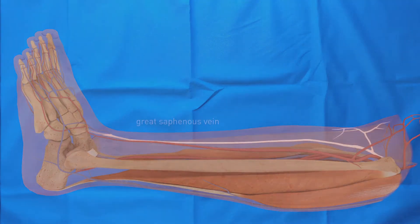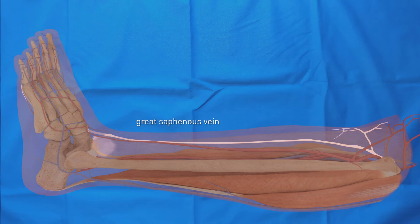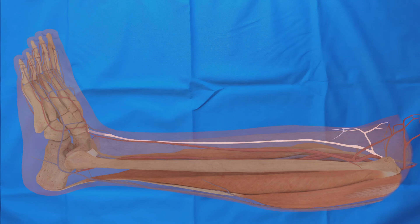The great saphenous vein is a subcutaneous vein known as the largest superficial vein in the body. It runs from the anterior side of the medial malleolus proximally on the medial side of the leg, and finally drains into the common femoral vein, which is not visible in this overview. The great saphenous vein is often used for both peripheral and central bypasses, and is often affected in people suffering from varicose veins.